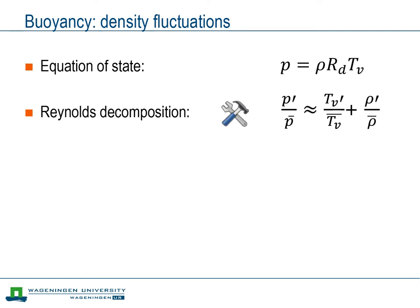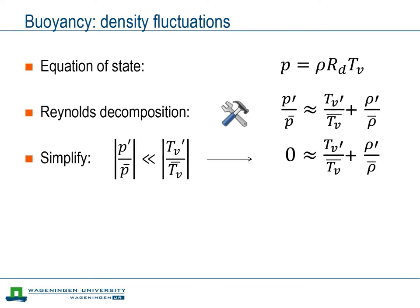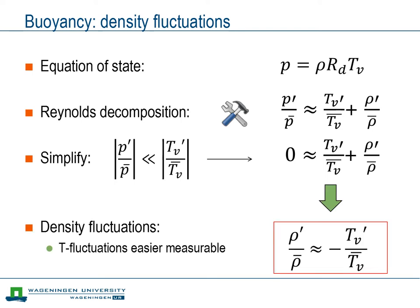Summarizing the results so far: the relative pressure fluctuations are in fact very small. As a result, the left-hand side vanishes, and we can express relative density fluctuations in terms of relative virtual temperature fluctuations. This is a useful result, as it is easier to measure temperature fluctuations than density fluctuations, and it is the main result we will use later on.